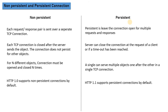In non-persistent case, for different objects the connection must be opened and closed every time — every time you open an object and then close it. In persistent case, different objects are served in a single TCP connection. Non-persistent connection is supported by HTTP 1.0, and persistent connection is supported by HTTP 1.1 by default.